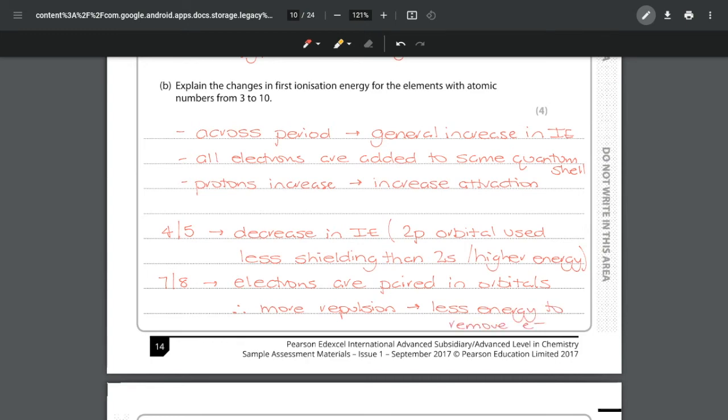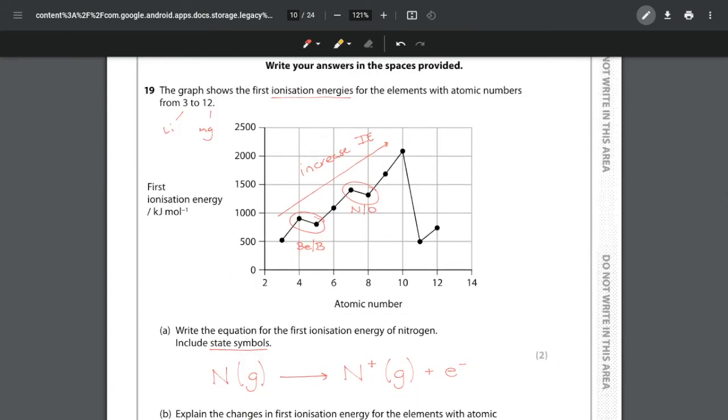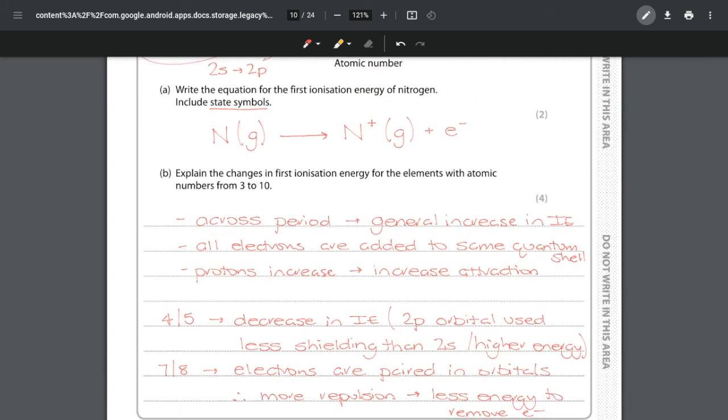So any dips in ionization energy like we see between beryllium and boron and nitrogen and oxygen we have to figure out why. The first one is because we go from the 2s to the 2p whereas the second one is because we go to paired from non-paired electrons. Both of these have a lower energy requirement to remove the electron because the paired electrons get an increase in repulsion, whereas going from 2s to 2p you get an increase in shielding. Anything that causes electron-electron repulsion to increase causes a decrease in ionization energy. We see what the general overall trend is and then identify any anomalies. That gets us our four marks.